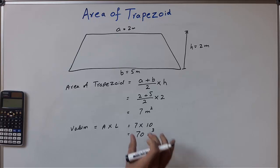So the volume of the trapezoid is 70 cubic meters and the area is 7 square meters. This type of geometry we normally use while constructing roads, railway tracks, and canal banks.